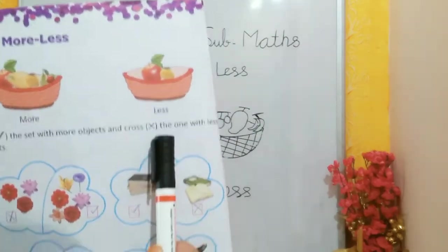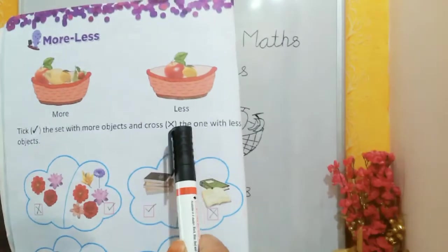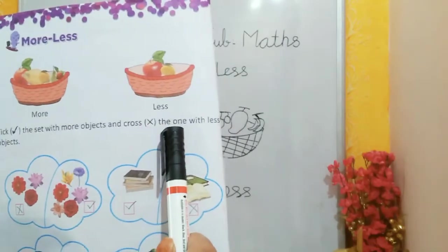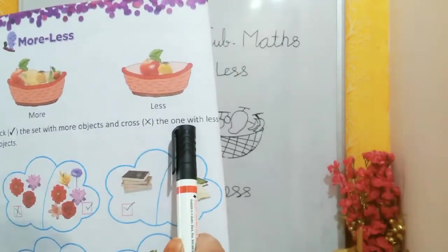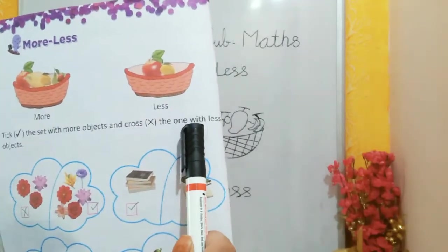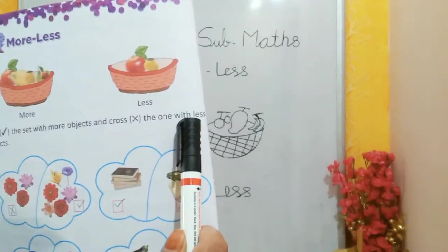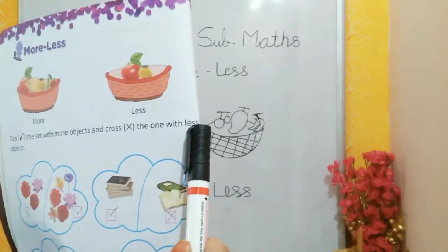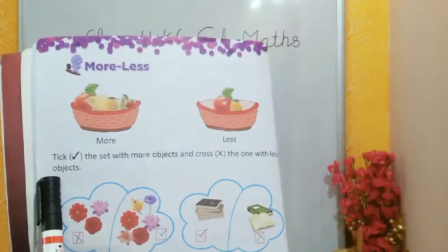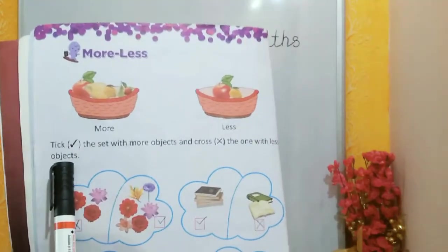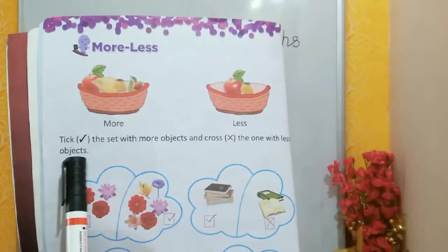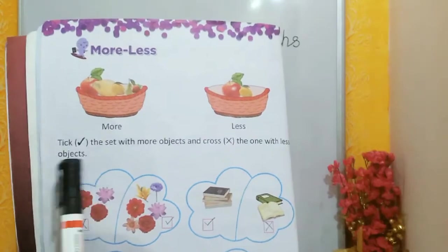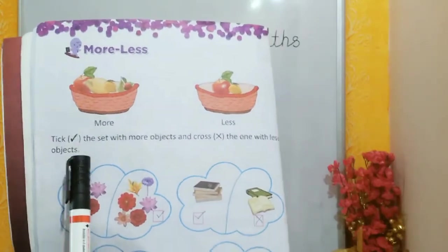Now in the bracket, you can see that students have a sign in the bracket. The one with more objects gets a tick, and the one with less objects gets a cross.